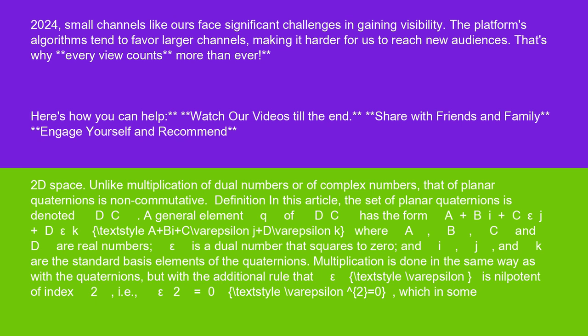And i, j, and k are the standard basis elements of the quaternions. Multiplication is done in the same way as with the quaternions, but with the additional rule that epsilon is nilpotent of index 2, i.e., epsilon squared equals 0, which in some circumstances makes epsilon comparable to an infinitesimal number.